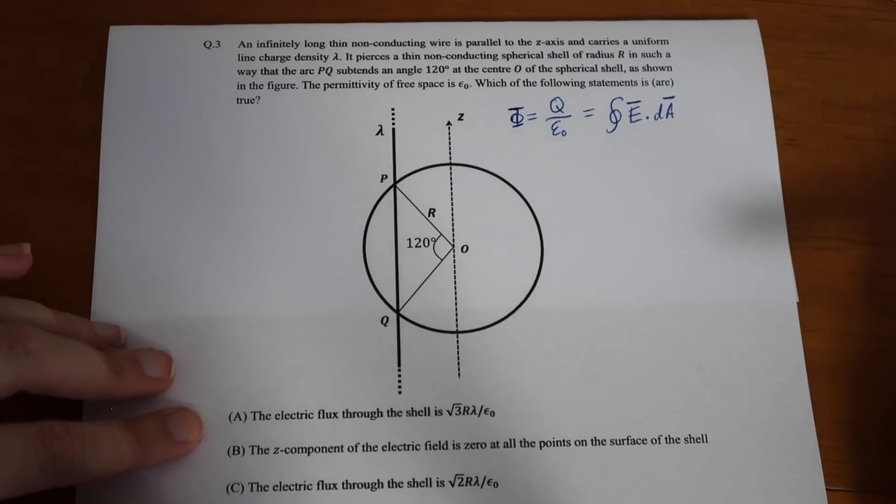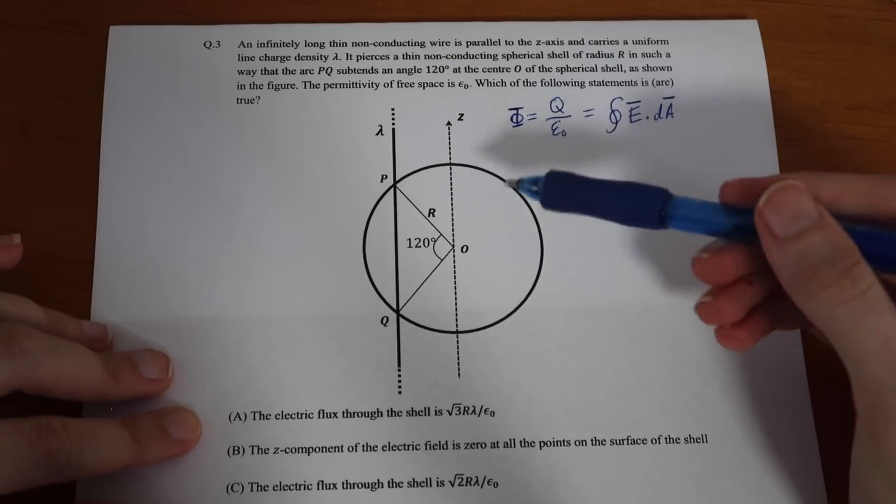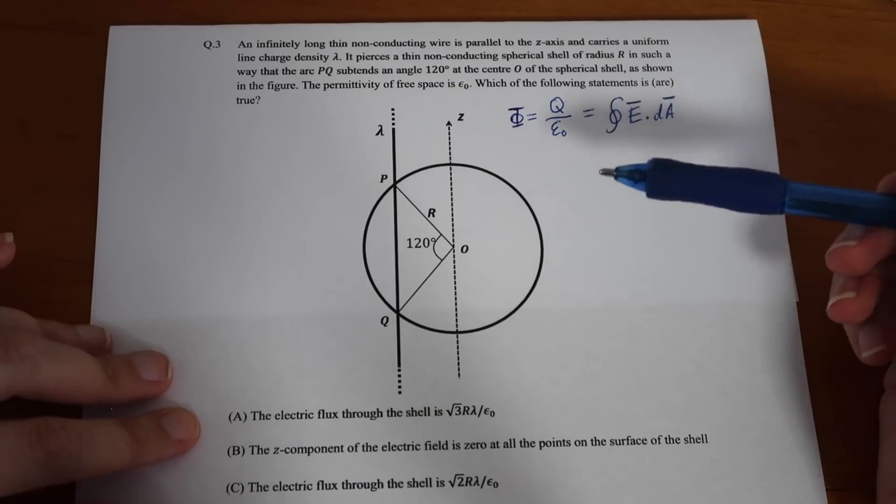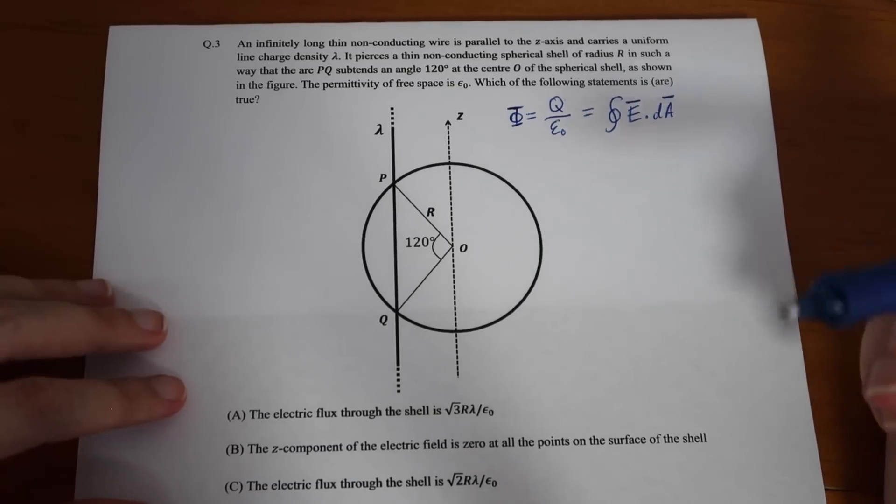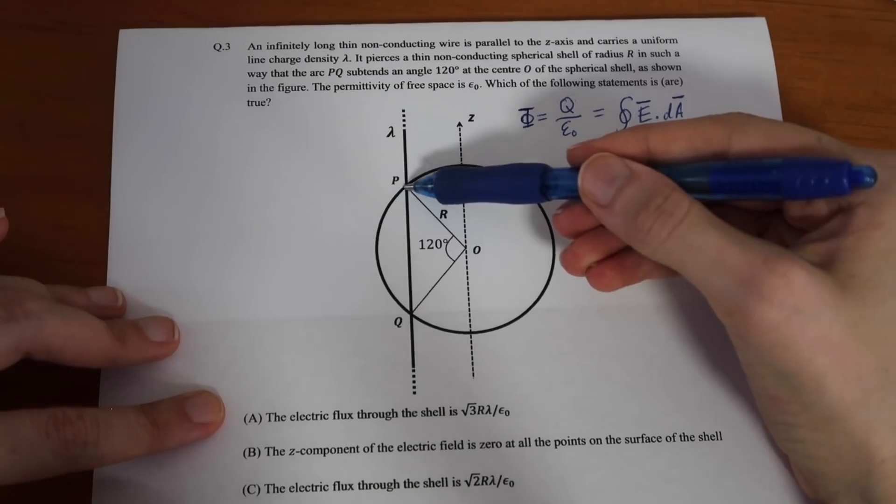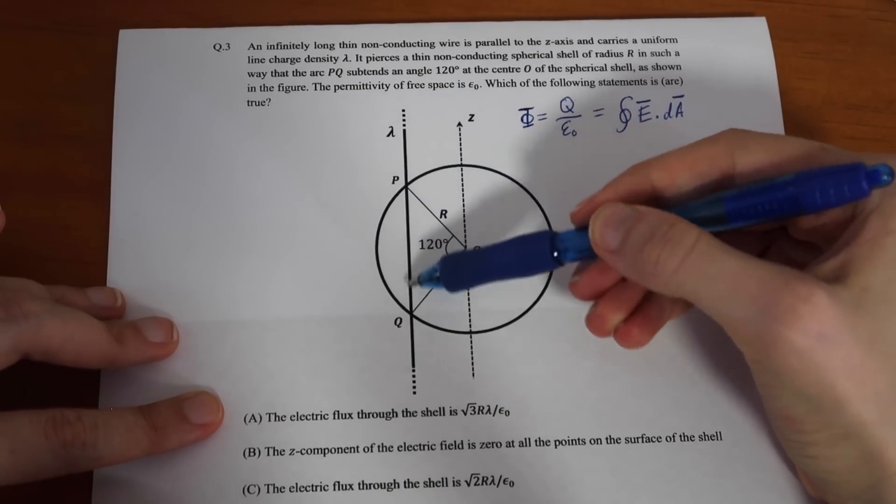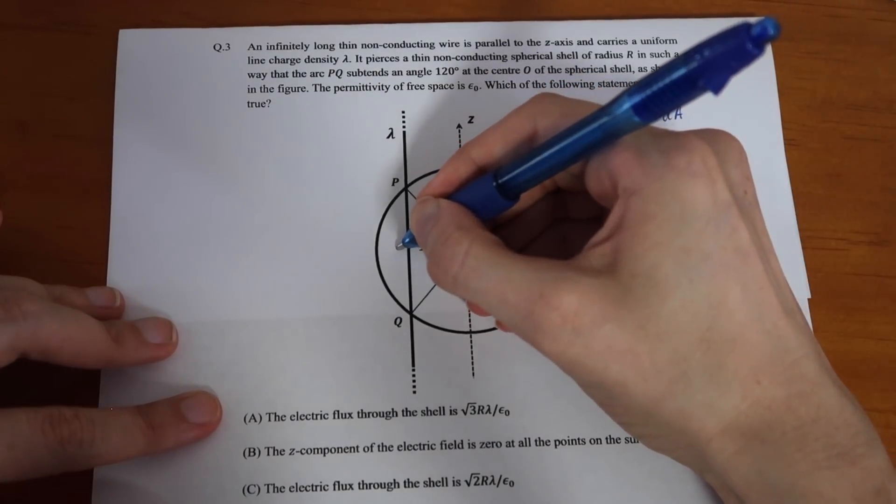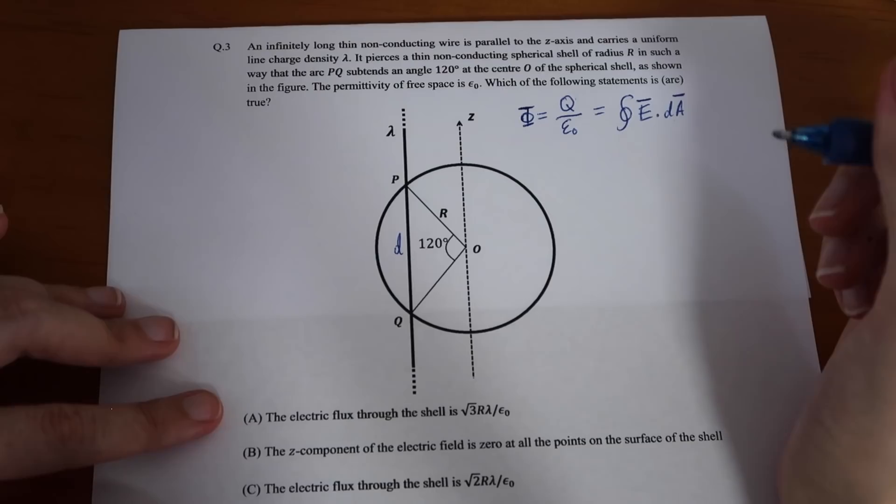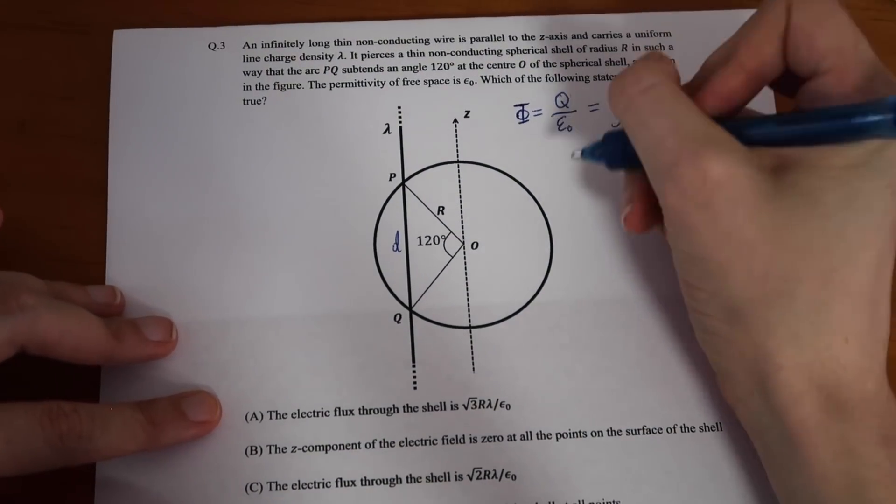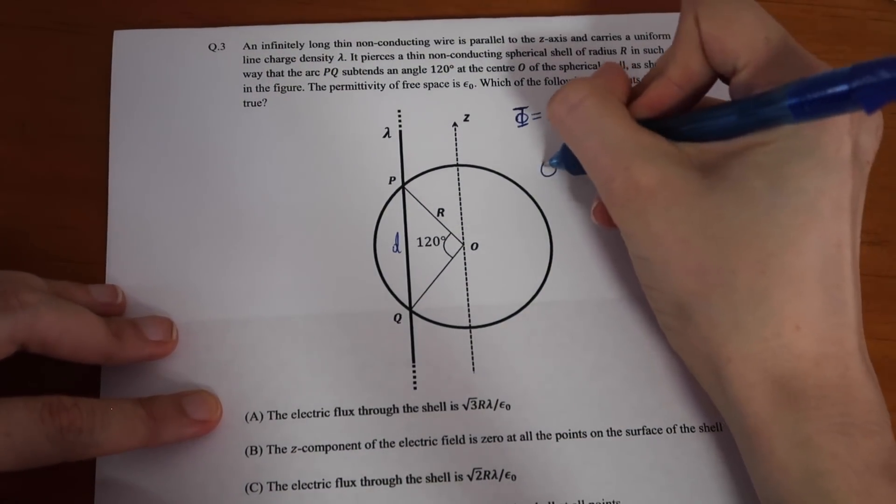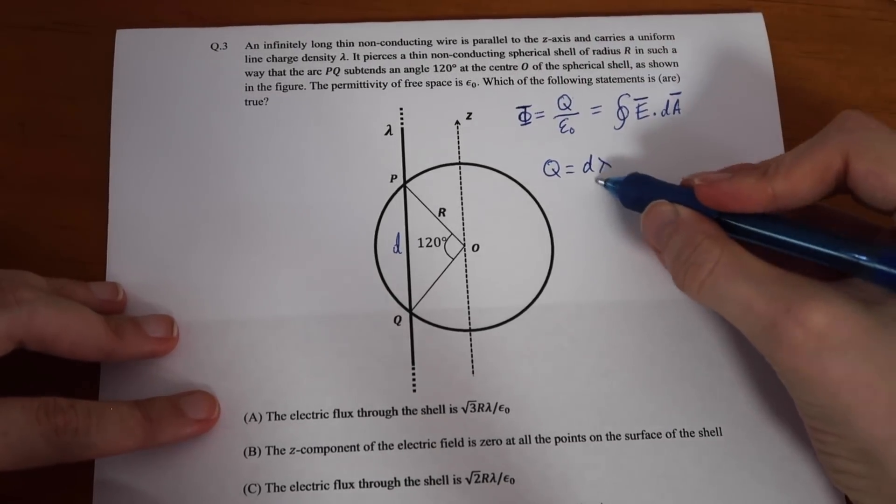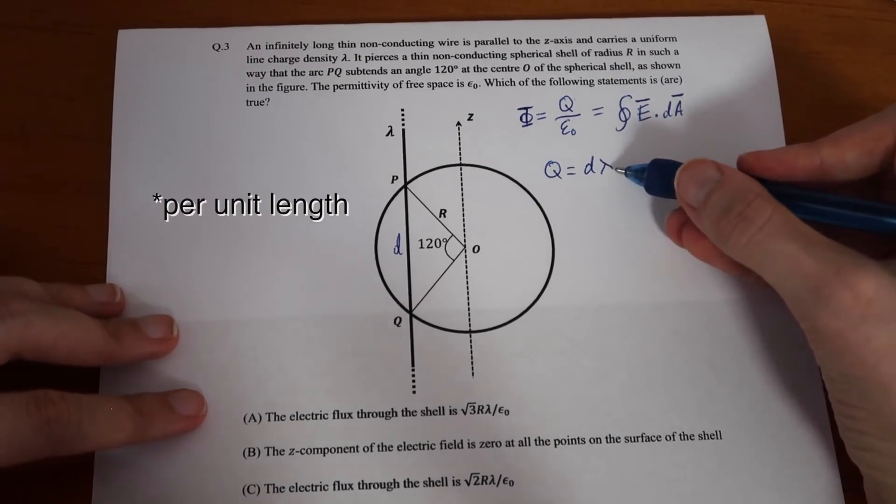So, what we want to start off by finding is the charge enclosed in our surface. So, our spherical shell will be our Gaussian surface, and we want to find the total charge inside of there. Now, the total charge is coming from this section, PQ, of our charged wire. So, I'm going to call that distance, PQ, D, and the total charge that is enclosed will be found by multiplying D by lambda, because this is the density of charge along the line per unit area.